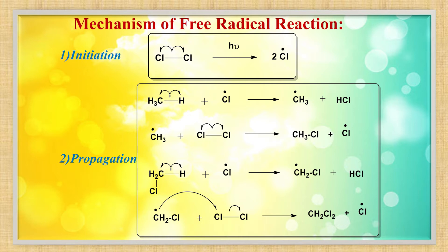One is called initiation, then propagation, and then termination. Initiation means you need a free radical for the reaction to start. Cl2 is a molecule with both chlorine atoms bonded by a single bond, and when you apply sunlight or diffused light, the bond undergoes homolytic fission or homolysis to produce two chlorine free radicals.